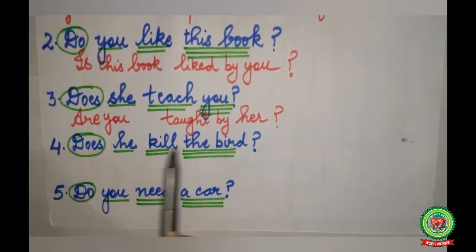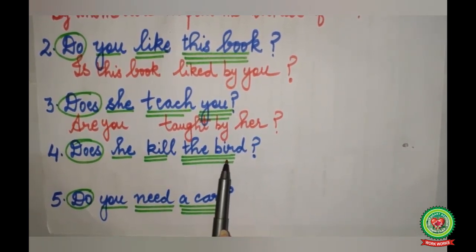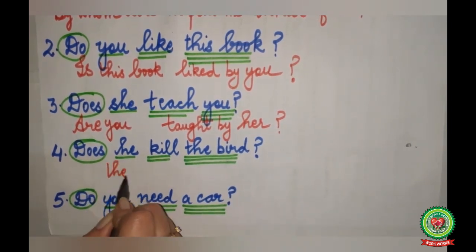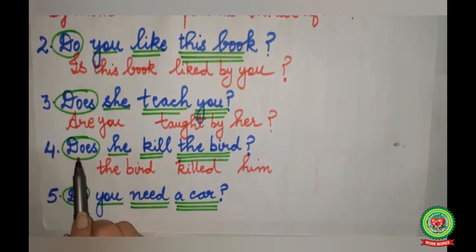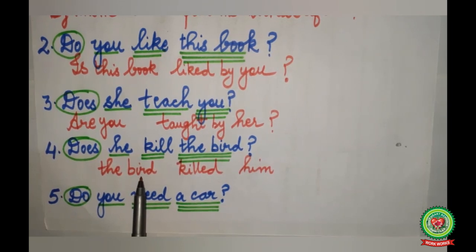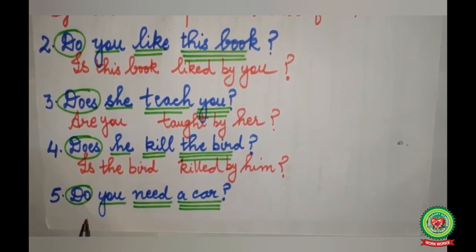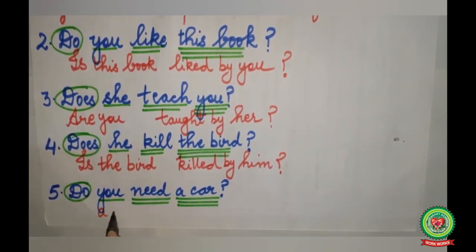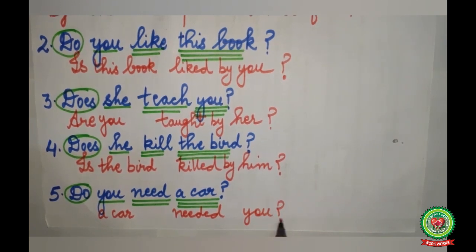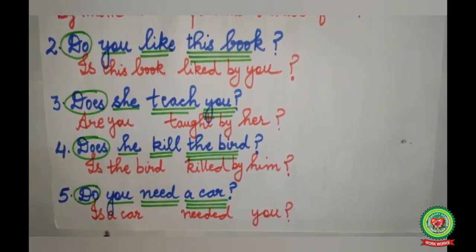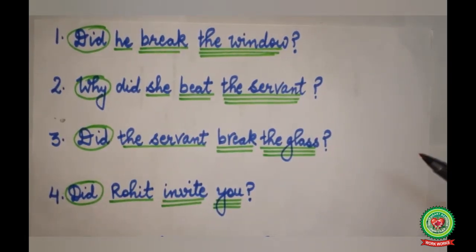The fourth example: 'Does he kill the bird?' 'He' is the subject — single underline. 'Kill' is the verb — double underline. 'The bird' is the object. 'The bird' will come to the beginning. 'Does' changes — since 'the bird' is singular, we use 'is' as the helping verb. 'Kill' changes into 'killed'. 'He' becomes 'him'. The passive: 'Is the bird killed by him?' The last example: 'Do you need a car?' 'Need' is the verb. 'A car' is the object. Passive: 'Is a car needed by you?' These are examples of simple present tense.